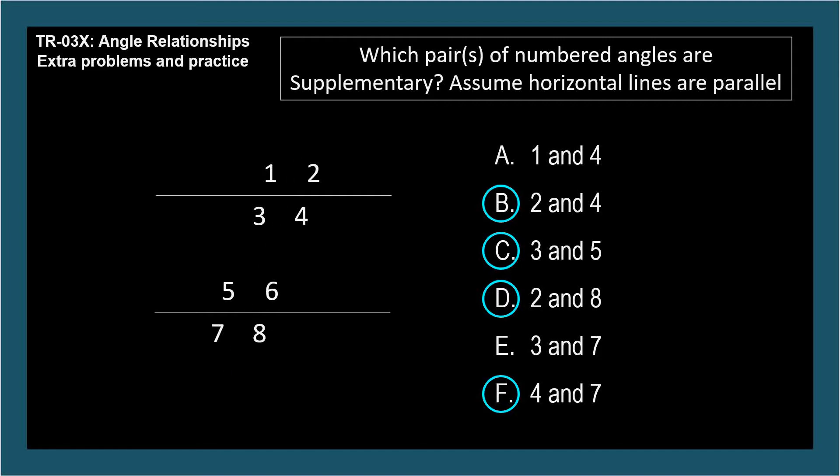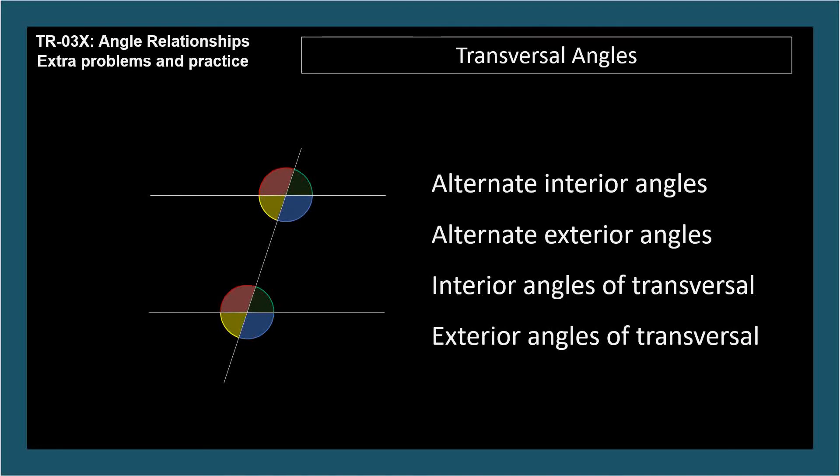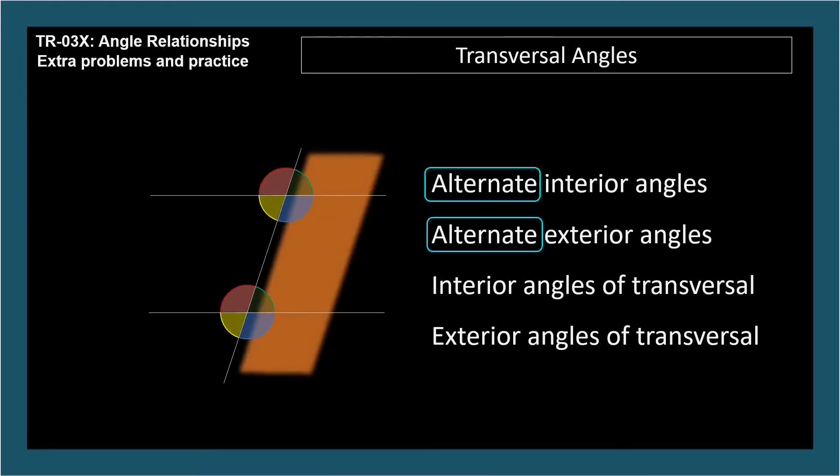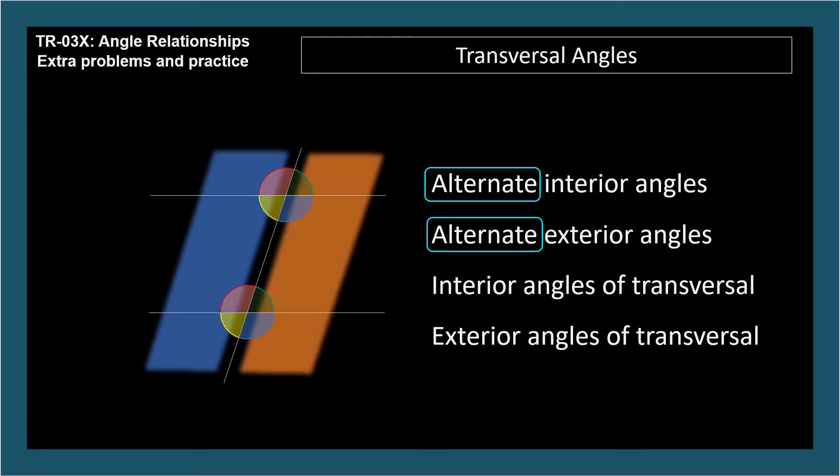What's this line called? Transversal or transverse line. Here are some extra helper slides for identifying transversal angles. Here are their names. They can be confusing. The word alternate means opposite side of the transversal. An alternate pair of angles would have one angle on each side of the transversal.